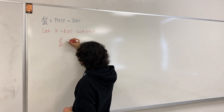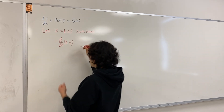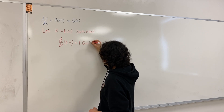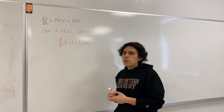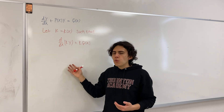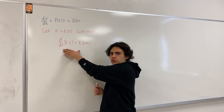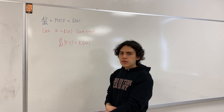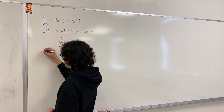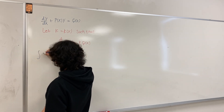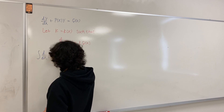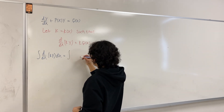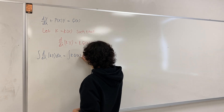Let k be a function of x such that the derivative with respect to x of the quantity k times y must be equal to k times q of x. This is a very important property. You may wonder why we care about this equation and why we want to find a k such that this is true. If you integrate both sides of this equation with respect to x, on the left-hand side you get the integral of d/dx of k times y with respect to x, and on the right-hand side you integrate k times q of x dx.